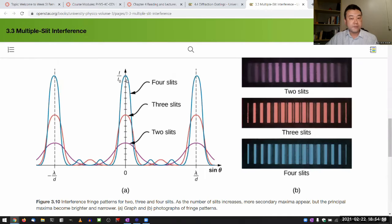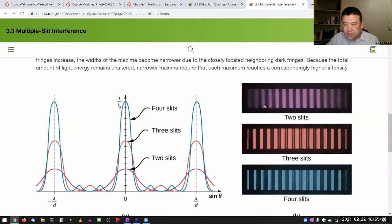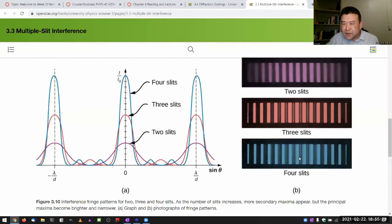The separation between the primary principal maxima are the same. Really, the distinguishing feature that changes as you add more slits is that the principal maxima become more pronounced. So with double-slit interference, which is this purple line here, the contrast between the maximum and a little distance away from the maximum isn't all that good. These plots don't really show it all that well. And as you add more slits, what you see is that these principal maxima remain strong, but these secondary maxima get smaller and smaller.